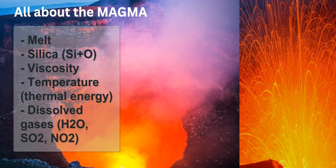When magma erupts on the surface, you have a volcano, generally defined as any crack in the Earth's surface that has flowing magma and lava, and is classified as active. A dormant volcano is one that is currently not erupting but has magma present in the chamber. An extinct volcano no longer erupts and the magma has solidified into an intrusive igneous body of rock. The silica content, viscosity, and amount of gas will dictate the eruption style and the type of rock the volcano is made of.